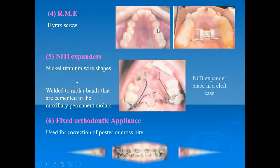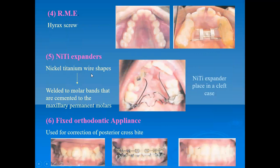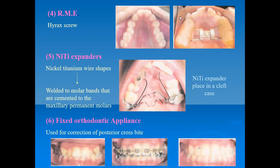For a highly narrow arch, rapid maxillary expansion can be used. A nightly expander — a bent wire that regains its shape — is ideally given in cleft lip and palate cases for gradual expansion. Fixed orthodontic therapy can also be used for correction of posterior cross bites. This covers the anterior and posterior cross bites — etiology, classification, and management techniques. It is a short note question, so please make notes and study.